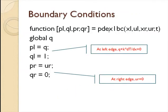So the way that looks is there's this function pdex1bc. The inputs are x at the left edge, u or temperature at the left edge, x at the right, u at the right, and time. So you can use any of those in your boundary condition. And you want to define p at the left, q at the left, p at the right, q at the right. So p at the left is q, q at the left is 1, p at the right is ur, and q at the right is 0. So those four things set up our heat flux on the left and our temperature on the right.